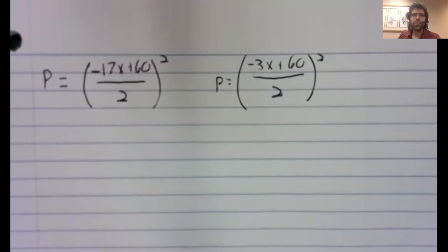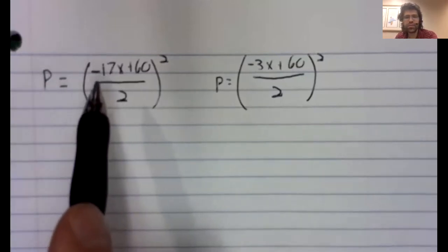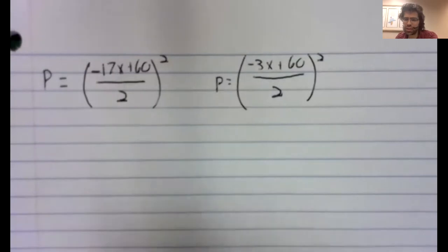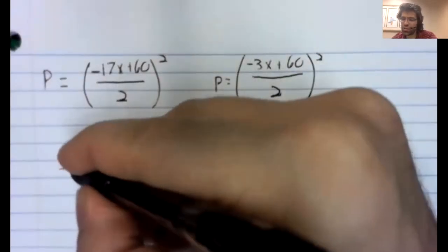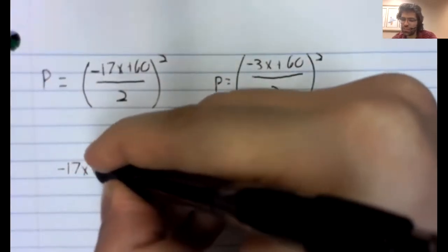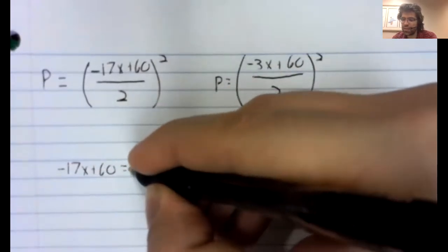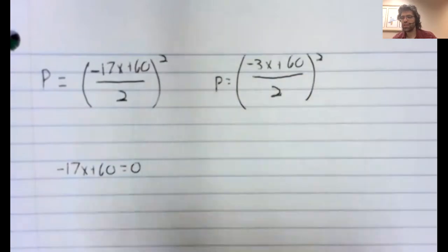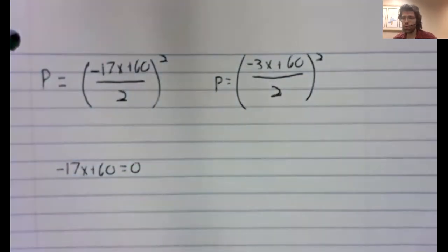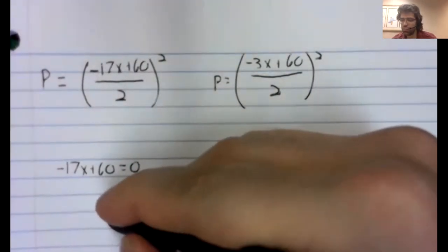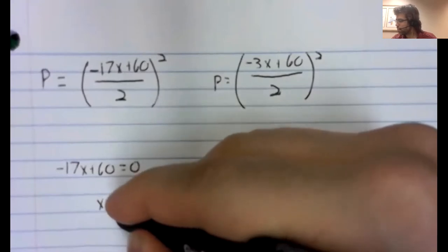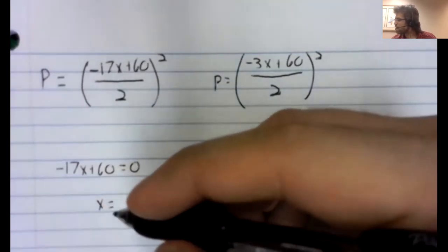And we are asked when the population will go extinct. So let's take this putative population formula and set it equal to zero.